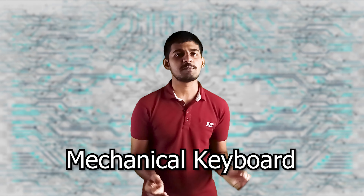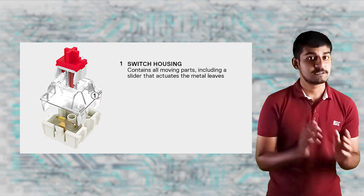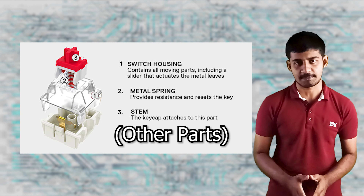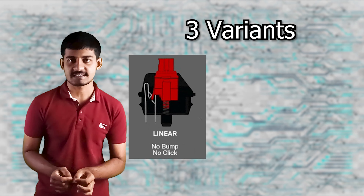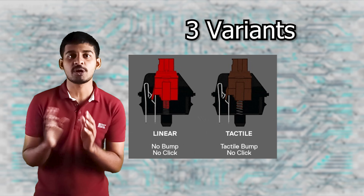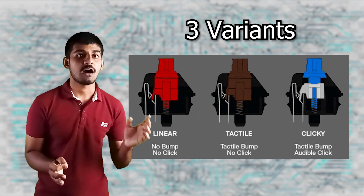In mechanical keyboards, every key contains a separate switch underneath. Every switch is composed of a housing, spring, stem, and sometimes other parts. Switches come in three variants: linear with consistent resistance, tactile with a non-audible bump, and clicky with a bump as well as an audible click.